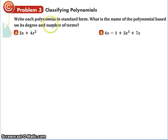Okay, classify. So write each polynomial in standard form. Remember, standard form is going from the highest exponent to the lowest exponent. So this one we would write 4x squared plus 3x. What is the name of the polynomial based on its degree and number of terms? Well, it's got two, so this is called a binomial.